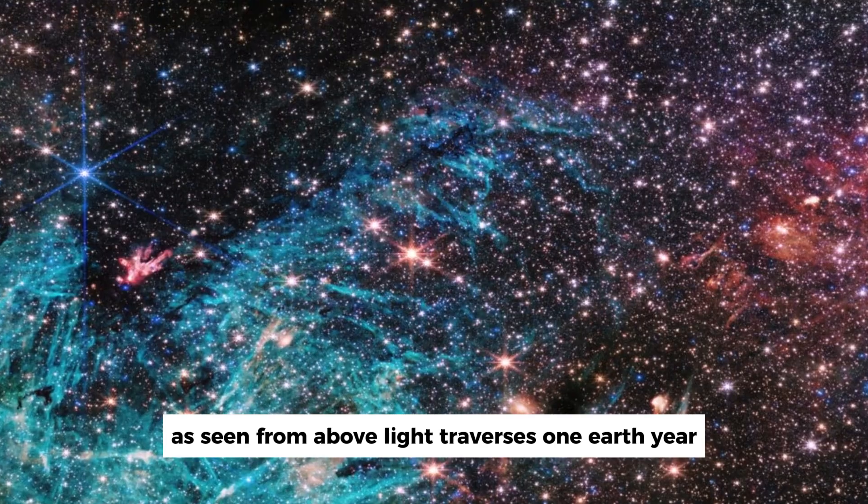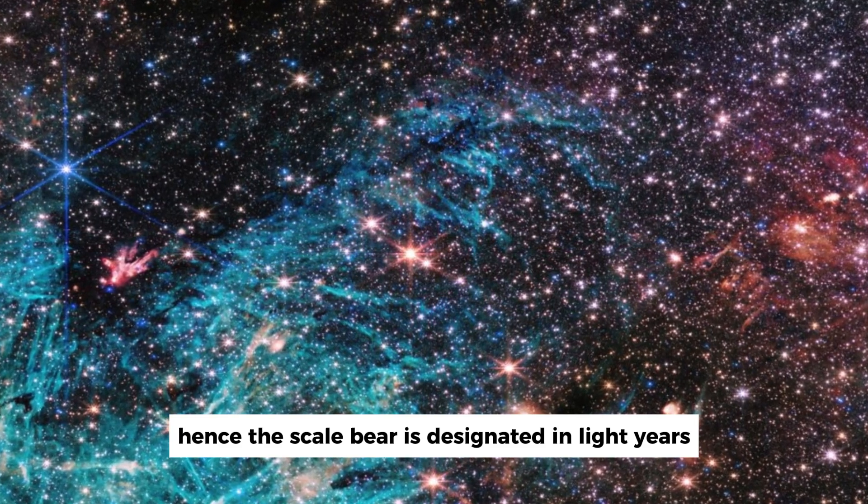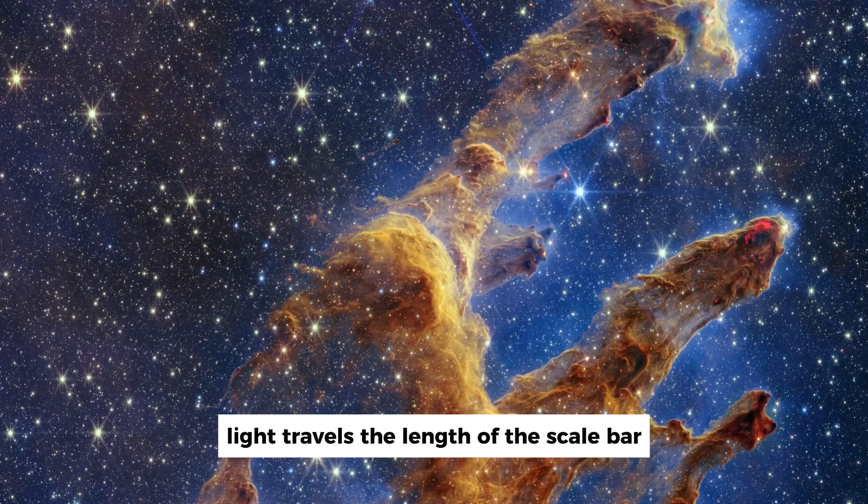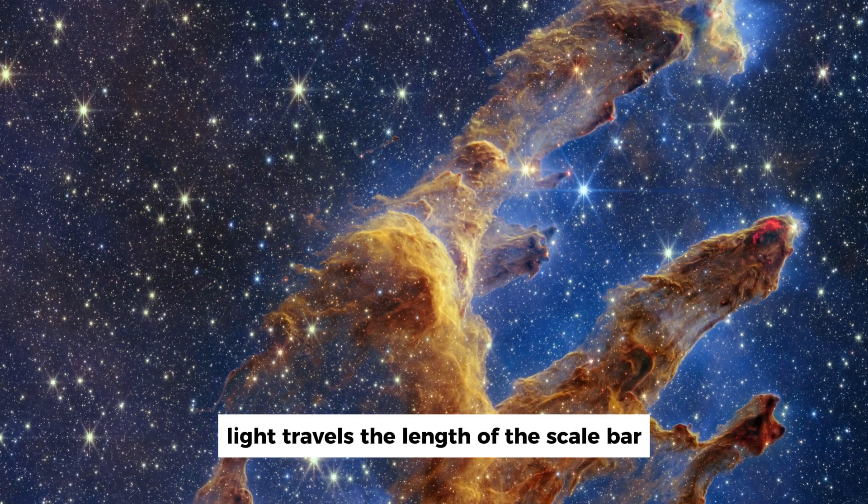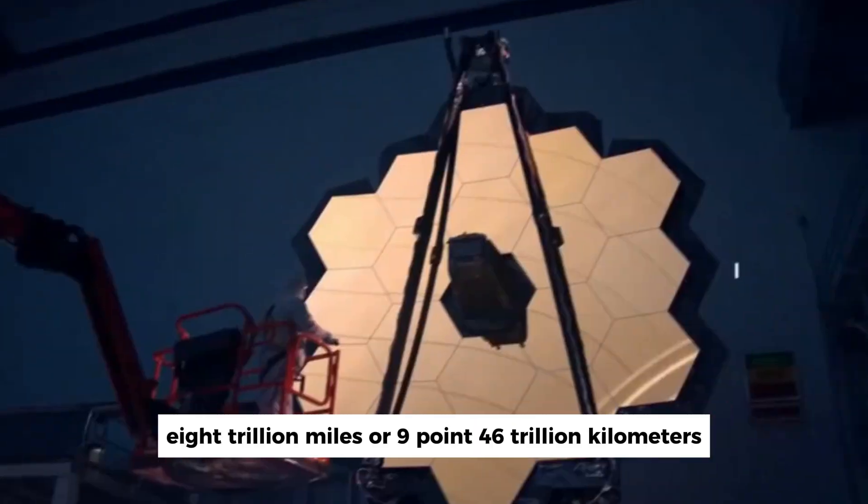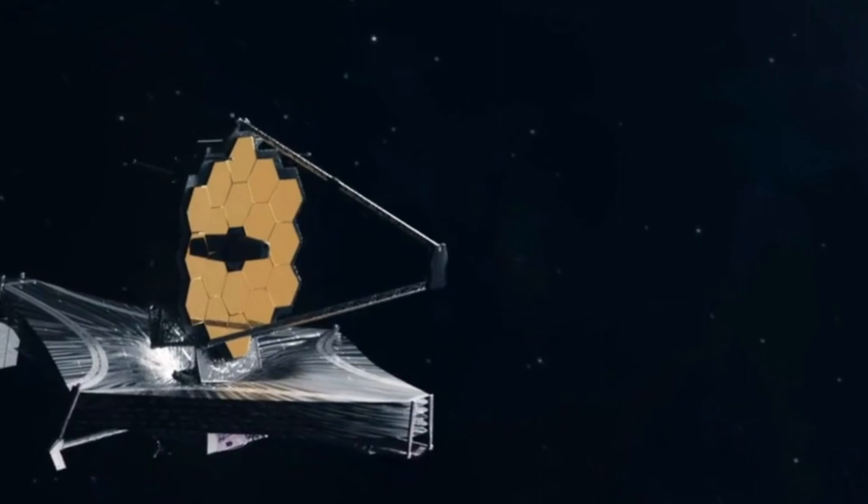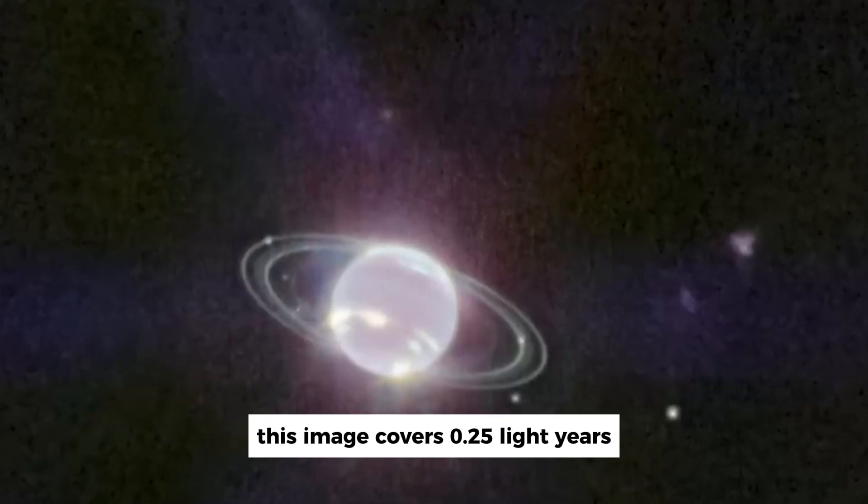Light traverses one earth year, hence the scale bar is designated in light years. Light travels the length of the scale bar in 0.25 of a year. Light years are 5.88 trillion miles or 9.46 trillion kilometers. This image covers 0.25 light years.